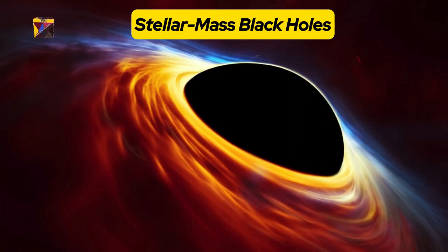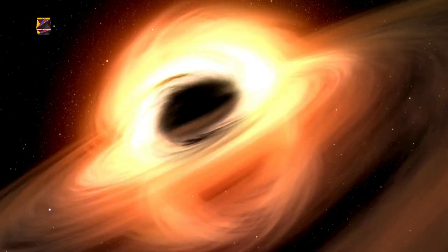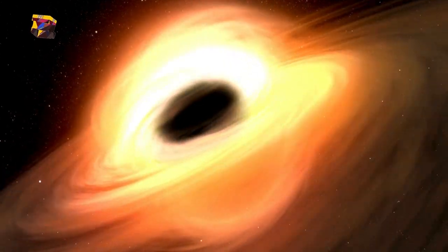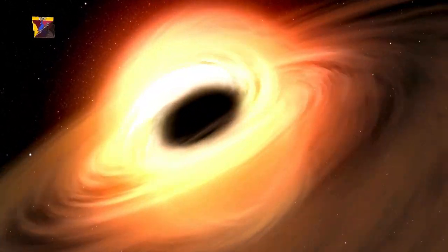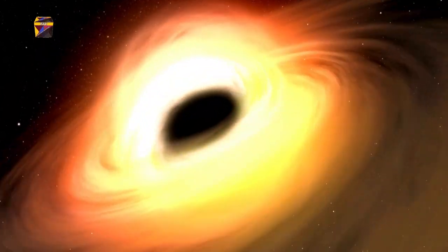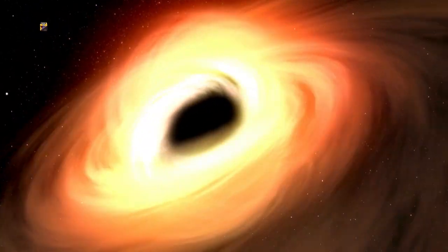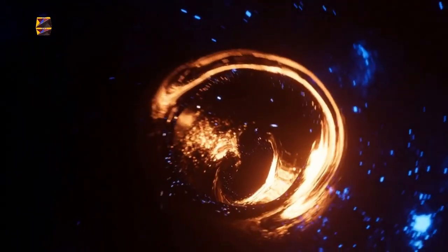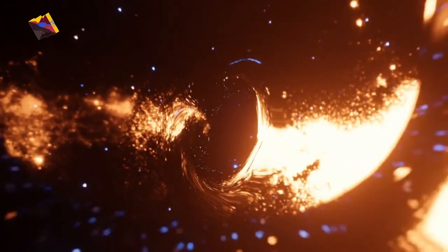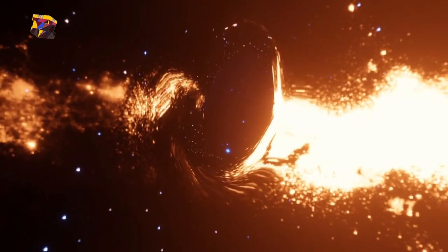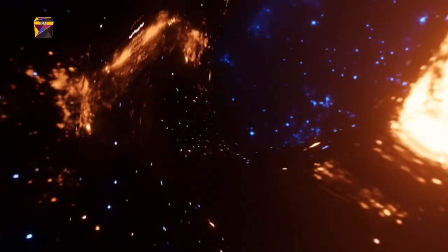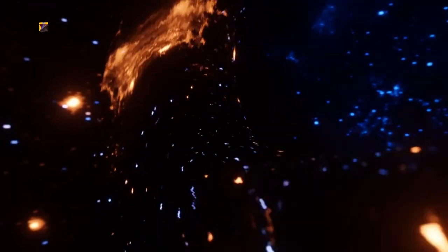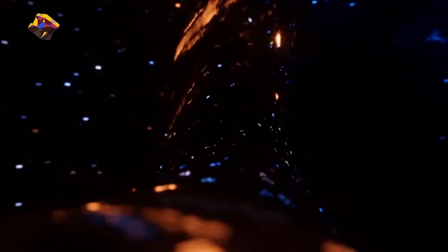Stellar mass black holes form when a star with a mass greater than about 20 times that of the sun exhausts its nuclear fuel and undergoes a supernova explosion. The core collapses under its own gravity, creating a black hole with a mass typically ranging from a few to tens of solar masses.